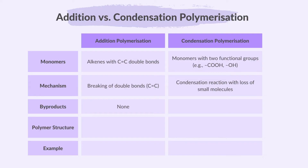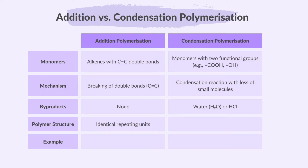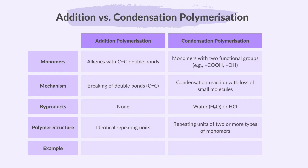In condensation polymerization, a small molecule such as water is released during the polymerization process. In addition polymerization, the polymer consists of a chain of identical repeating units derived from a single type of monomer. In condensation polymerization, the polymer consists of repeating units formed by two or more different types of monomers. Examples of addition polymerization include polyethene from ethene monomers; for condensation polymerization, nylon is a polyamide and PET is a polyester.